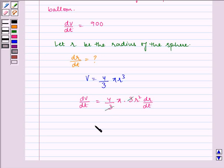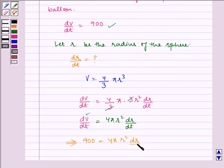The 3 cancels out. Now, substituting the value of dV by dt as 900, we get 900 equals 4 pi R square dR by dt.